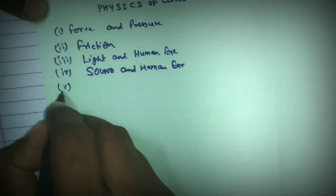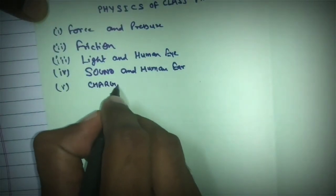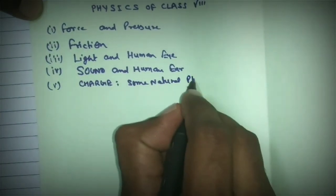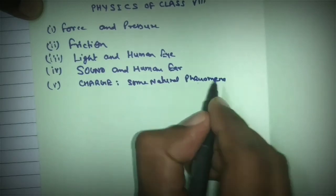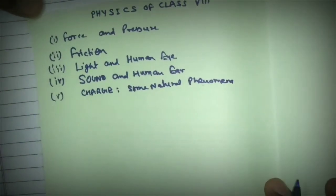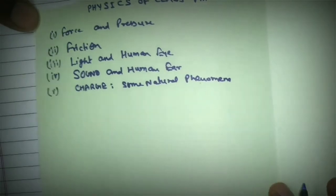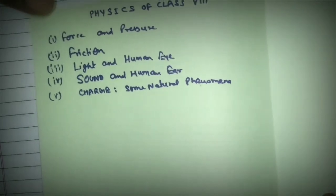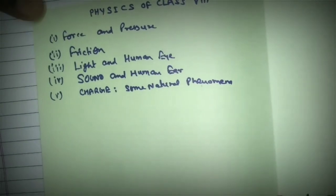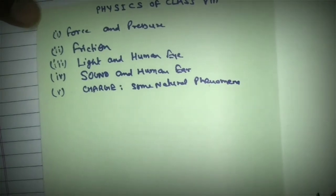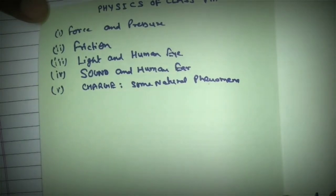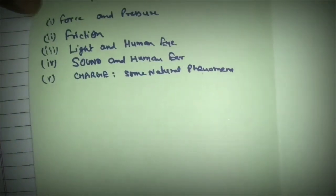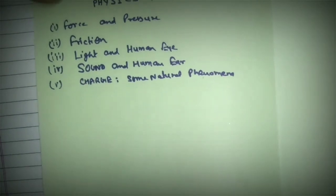Next chapter is charge and some natural phenomena. In this chapter we discuss the properties of charge and some phenomena related to charge like the lightning phenomenon. We also discuss some small experiments like Benjamin Franklin's experiment and a simple laboratory experiment called the gold leaf electroscope experiment.